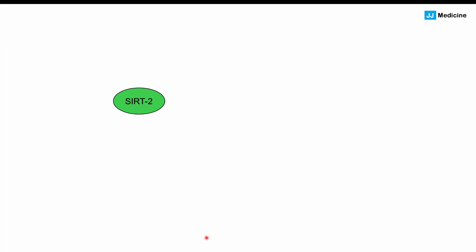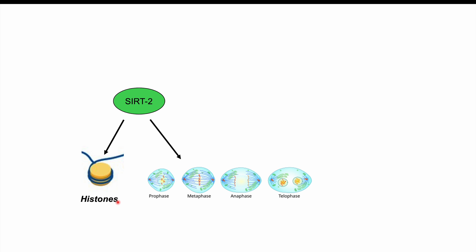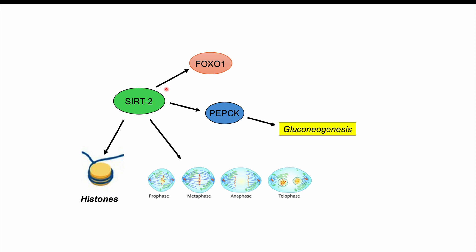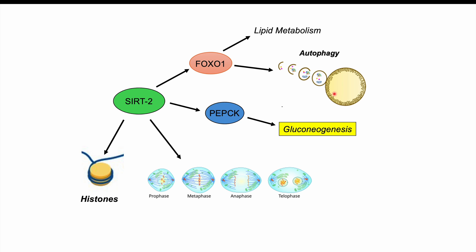Moving on to SIRT2 — it can be found in both the nucleus and cytoplasm, but more in the cytoplasm than SIRT1. It is also a histone deacetylase and has important functions in mitosis. When there is DNA damage, SIRT2 will halt cell division, guarding the cell against replication problems. SIRT2 also controls the cell cycle, can activate PEPCK for gluconeogenesis, and activates FOXO1, which is involved in lipid metabolism and autophagy.